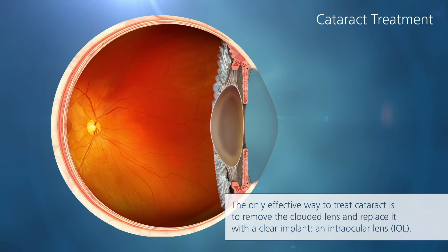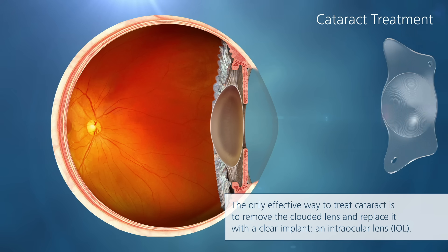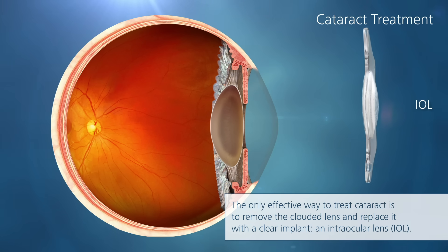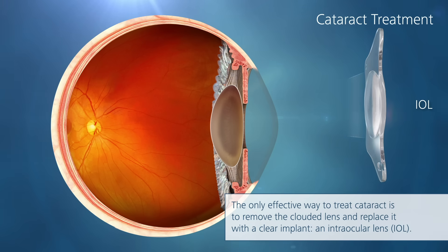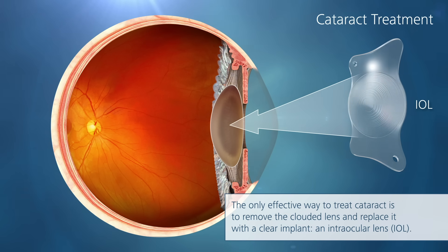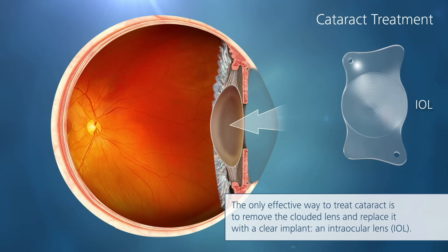The only effective way to treat cataract is to remove the clouded natural lens and replace it with a clear implant, a so-called intraocular lens, IOL.